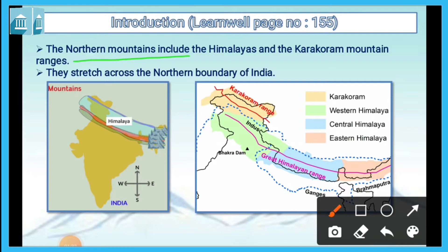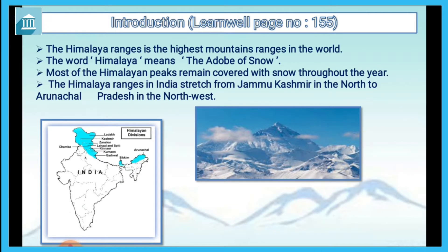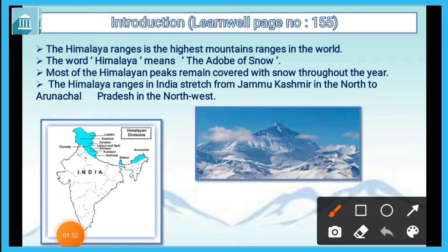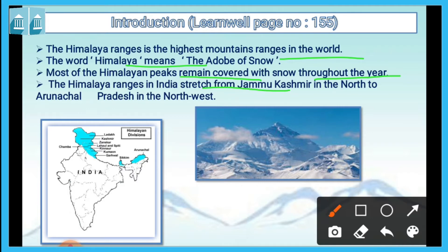The Northern Mountains include the Himalayas and the Karakoram Range mountain ranges. They stretch across the northern boundaries of India. The Himalayas Range is the highest mountain range in the world. The word Himalaya means the abode of snow. Most of the Himalayan peaks remain covered with snow throughout the year.